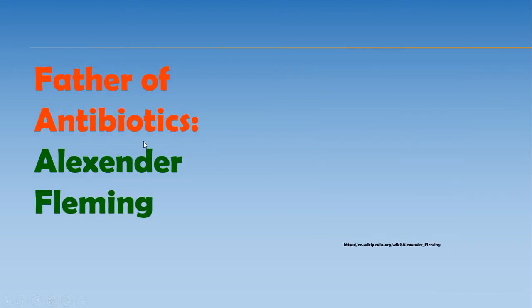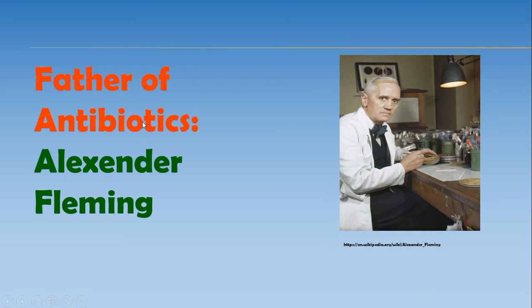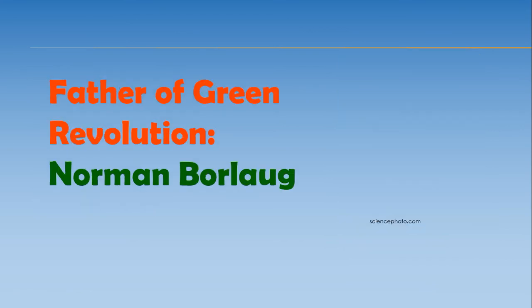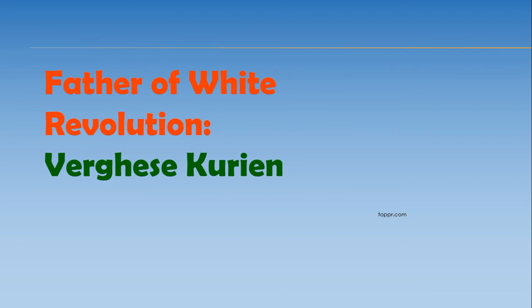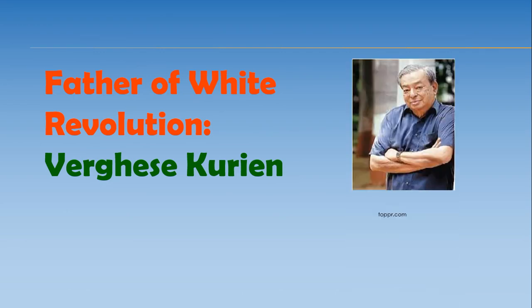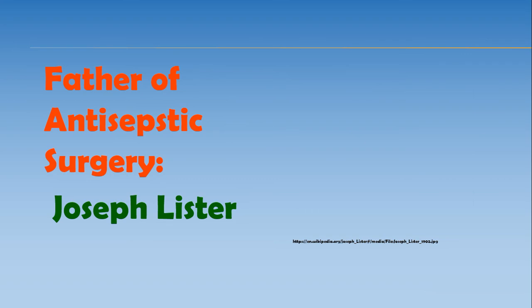The next father is the father of antibiotics, Alexander Fleming. He discovered the first antibiotic, penicillin. Next is the father of the green revolution, Norman Borlaug. Next is the father of the white revolution, Verghese Kurian. Verghese Kurian gave his services and important inventions for the dairy industry.